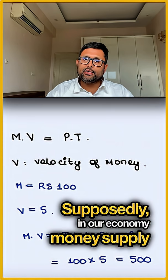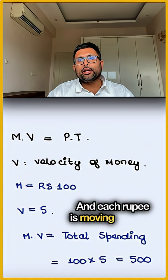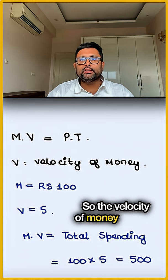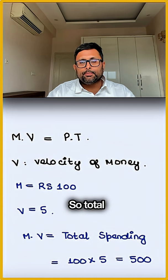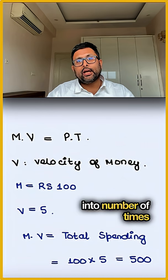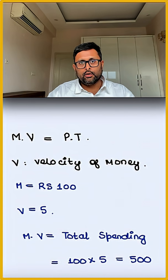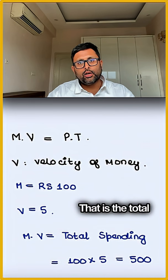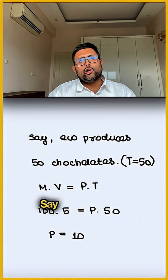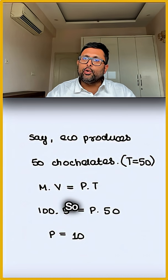Suppose in our economy, money supply is rupees 100, and each rupee is moving around five times in the economy, so the velocity of money is five. Total spending is the amount of money in the economy multiplied by the number of times each rupee note is moving — that gives us total spending of 500. Say the economy produces 50 chocolates, so the number of transactions equals 50.